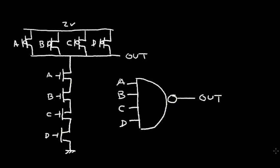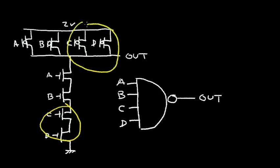So far I've shown two-input NAND gates and NOR gates. To make a 4-input NAND gate, it's very simple — we just add more series transistors and more parallel transistors. If we want to make a 4-input NOR gate, we would add 4 series PFETs and 4 parallel NFETs.